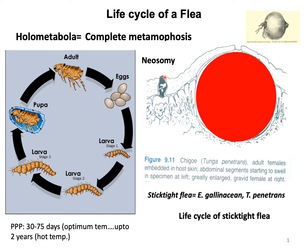After mating, the female Tunga will lay fertilized eggs, which drop down to the ground. On the ground, the egg hatches into a first instar larva, and it will require two or three molting events to reach the pupa stage, after which the pupa develops into the adult.